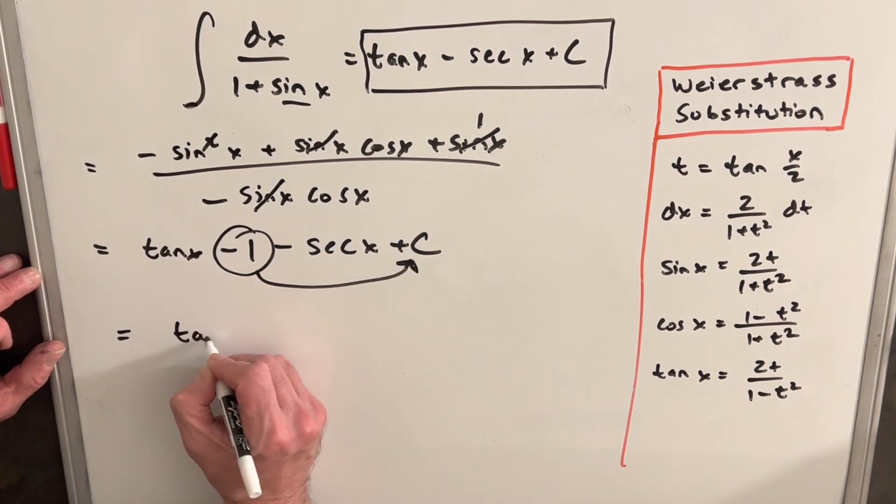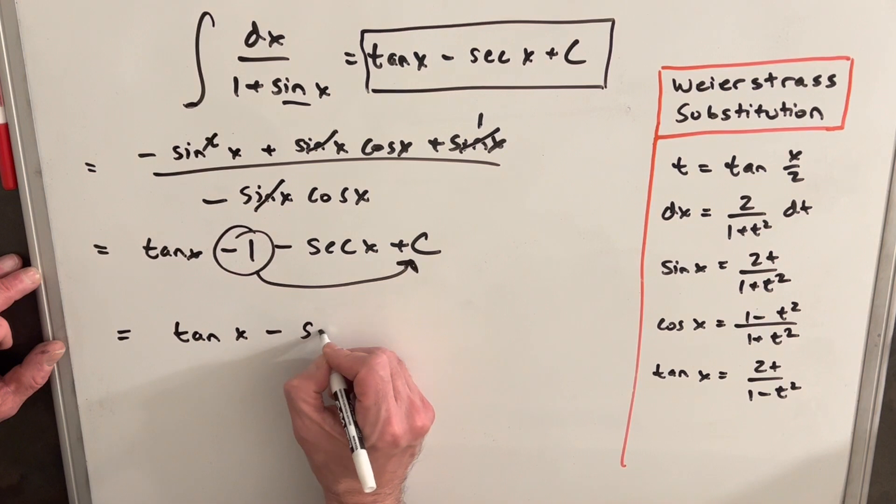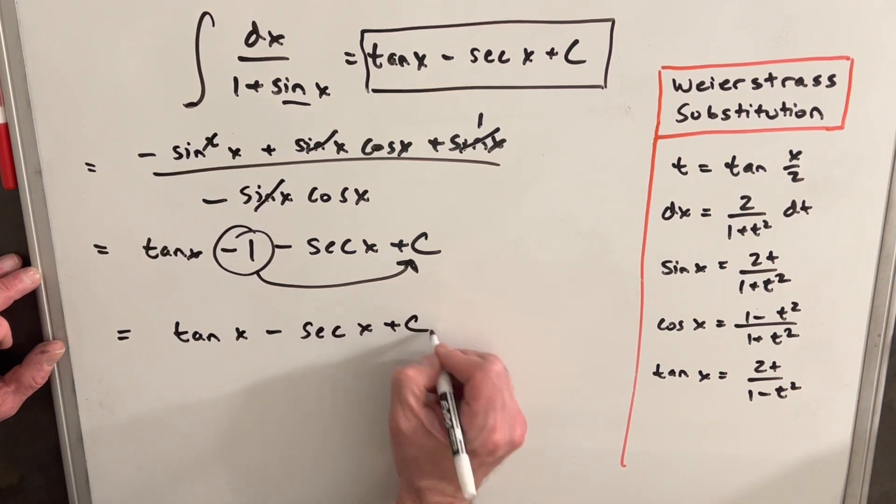So we're left with the final answer, tan x minus secant x plus c.